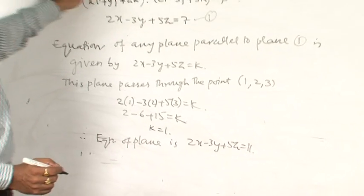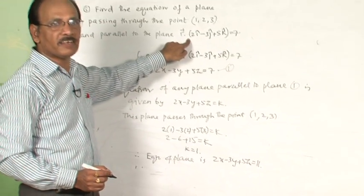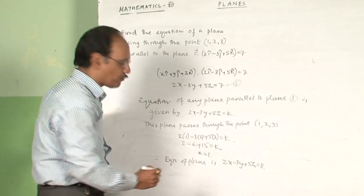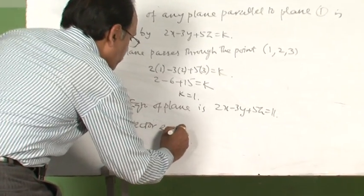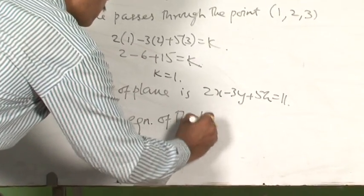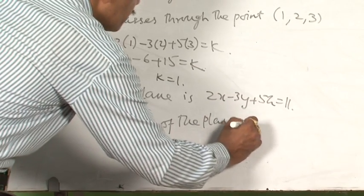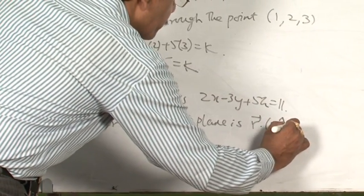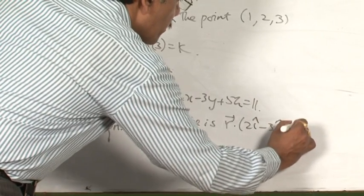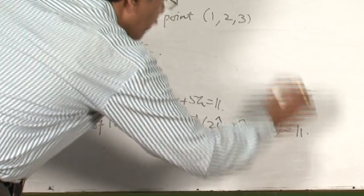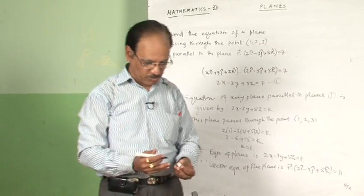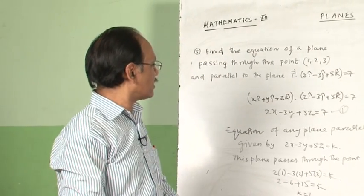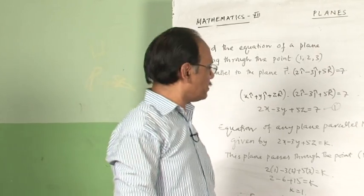Since the question is given in vector form, the answer in vector form is r·(2î-3ĵ+5k̂) = 11. We have now covered and discussed all the formulas pertaining to the plane and the variety of questions which appear in the board examination.